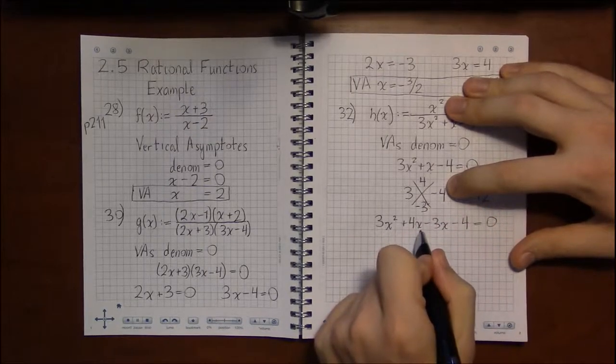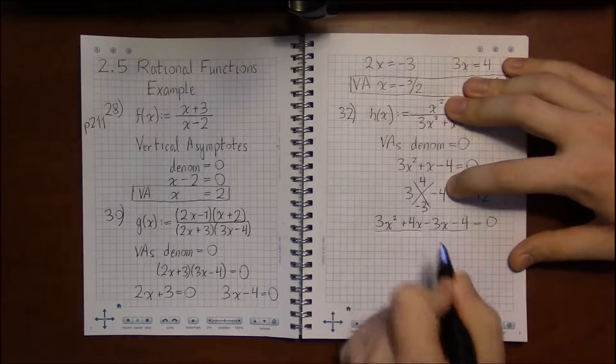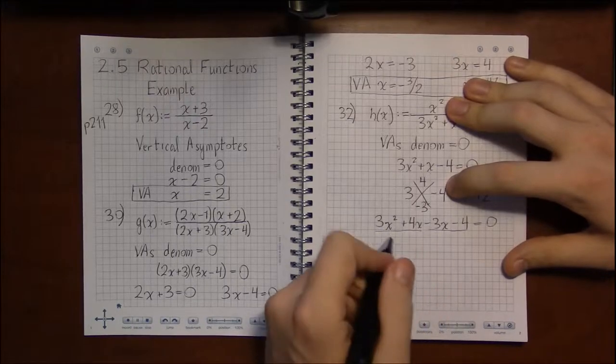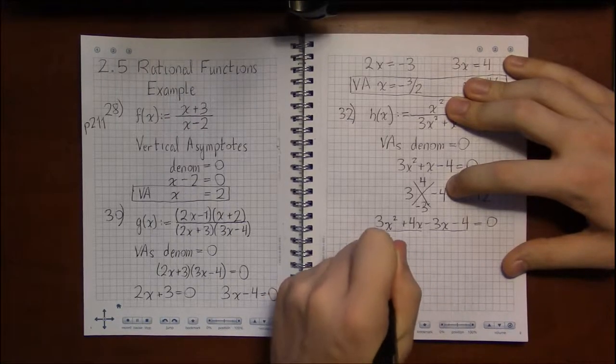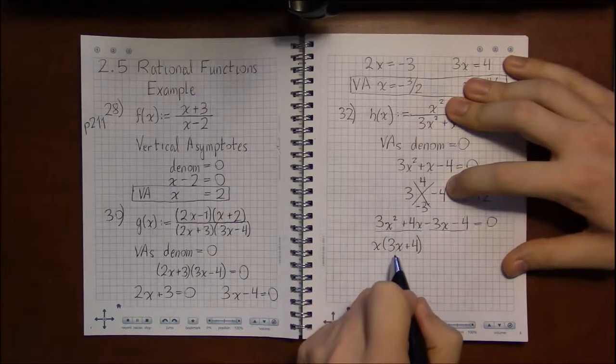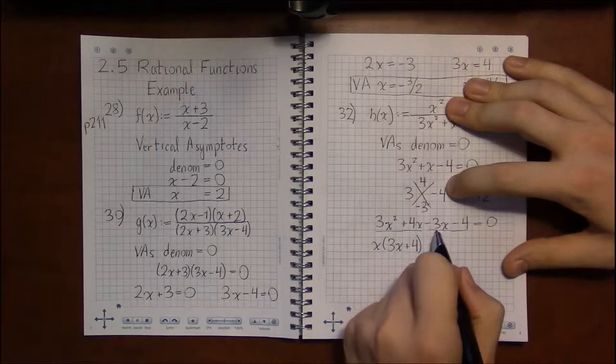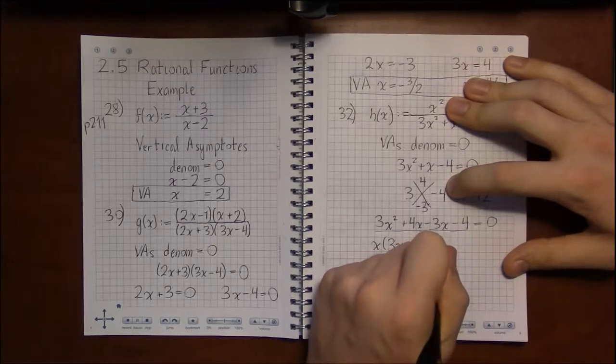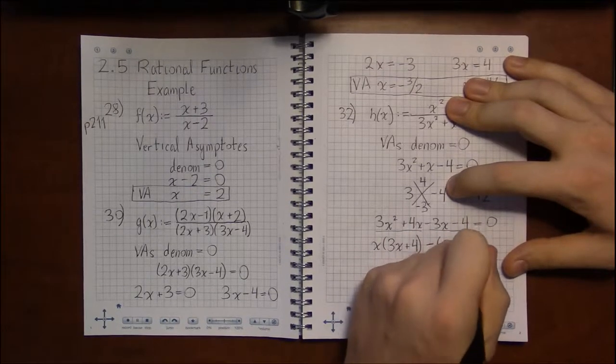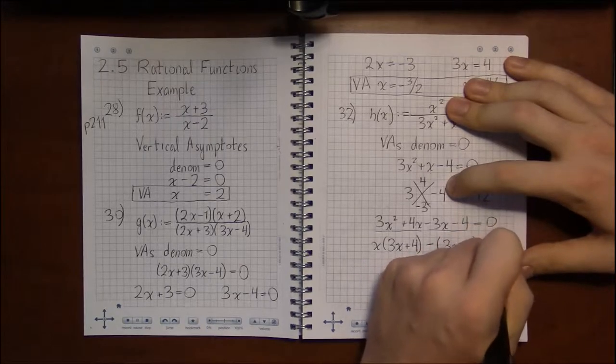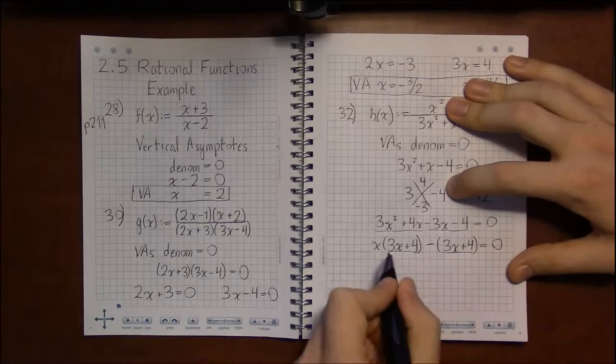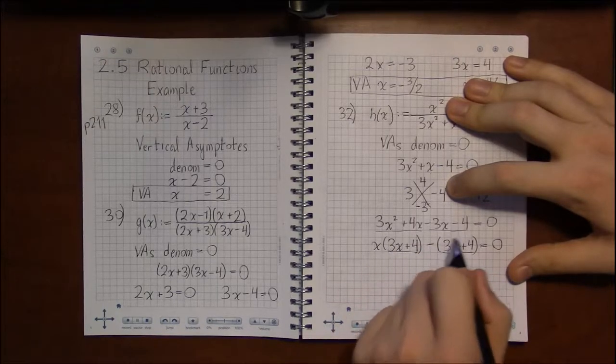Now I look at the first two and last two and factor out what's in common. In the first two, it looks like there's just an x that's in common with both terms. So factoring an x out leaves me with 3x plus 4. In these next two, they both have negatives. So let's factor out a negative, and what's left over will be 3x plus 4, which is nice. Because now the things in parentheses are equal, and we can factor them out of these two terms.